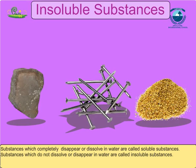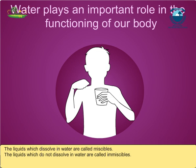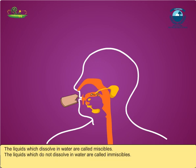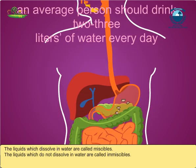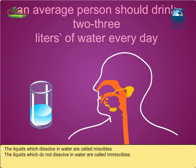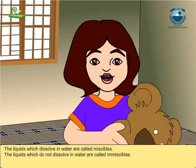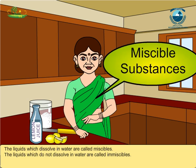Come, I will show you. Water plays an important role in the functioning of our body. It dissolves a large number of substances. It also helps in absorption of food and excretion of waste products from the body. An average person should drink 2–3 litres of water every day. Do liquids also dissolve in water? Yes. There are many liquids which dissolve in water. The liquids which dissolve in water are called miscible substances.